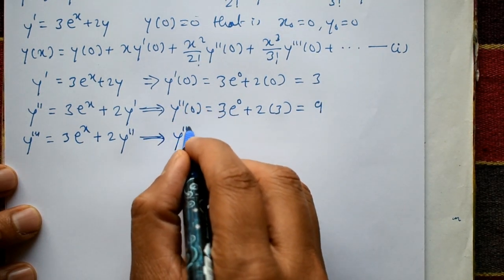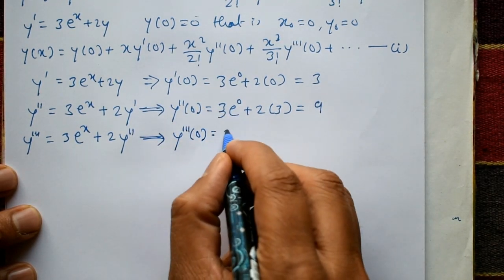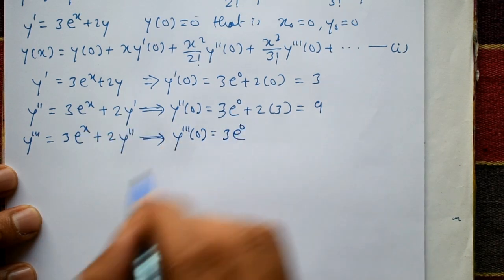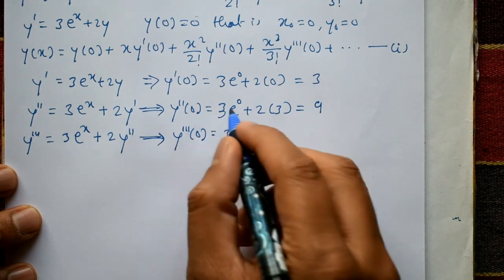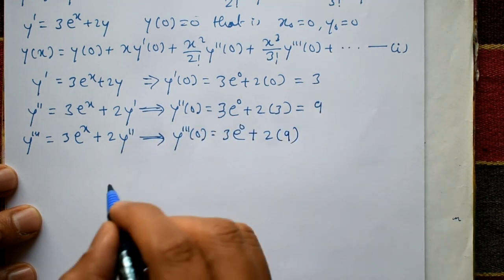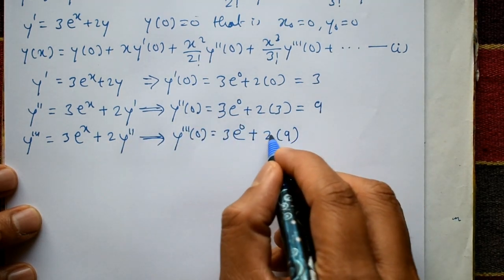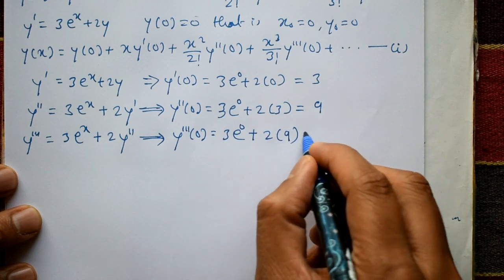Using initial conditions, y'''(0) = 3e^0 + 2·y''(0). That value is 9. This is 3 + 2(9) = 18 + 3 = 21.